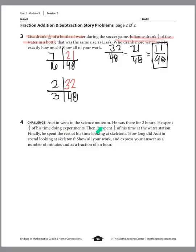Last one — challenge: Austin went to the science museum. He was there for two hours. He spent 3/5 of his time doing experiments, then 1/3 of his time at the water station. Finally, he spent the rest of his time looking at skeletons. It's important to remember that 3/5 refers to 3/5 of his total time — so 3/5 of two hours, not one hour.